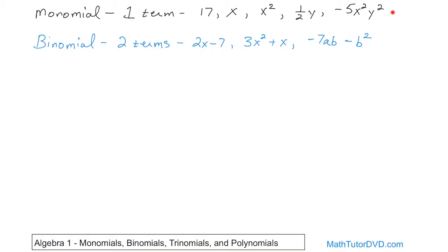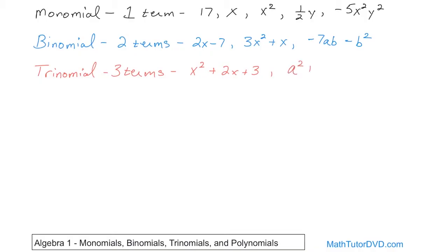It's much easier now that I have everything on the board. If it's just one term hanging out by itself, we call it a monomial. If it's two terms, we call it a binomial. What do you think we're going to talk about next? Trinomials — it's going to be three terms joined by either a plus or a minus sign. For instance, x squared plus 2x plus 3 is a trinomial because you have a term here, a term here, and a term here, joined by plus signs. Or a squared plus 4ab minus 3b — that's a trinomial: one term, two terms, three terms joined by pluses or minuses.